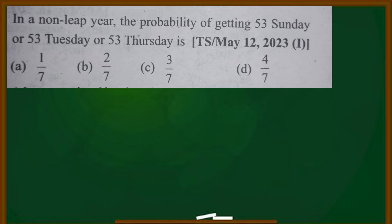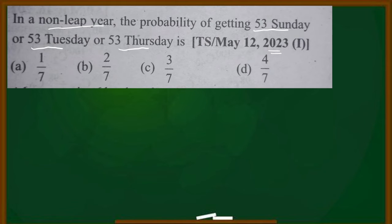This next question is the same model. A non-leap year — find the probability of getting 53 Sundays or 53 Tuesdays or 53 Thursdays. This is the same method as before.